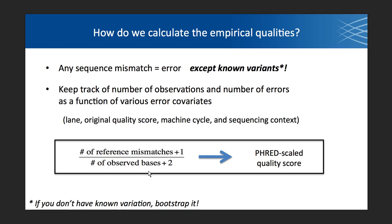If you don't provide known variant sites, the workflow thinks the data is of lower quality and will penalize your downstream calling, so you definitely want to mask sites. You might be wondering what happens to those novel variants that aren't in the known sites resource — well, these will be very few compared to the systematic bias that the tool is looking at, so it should not be a problem.